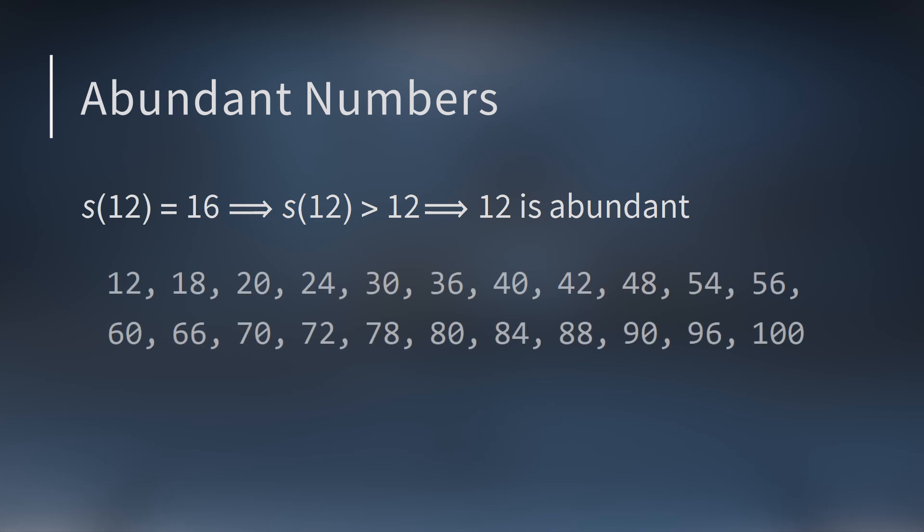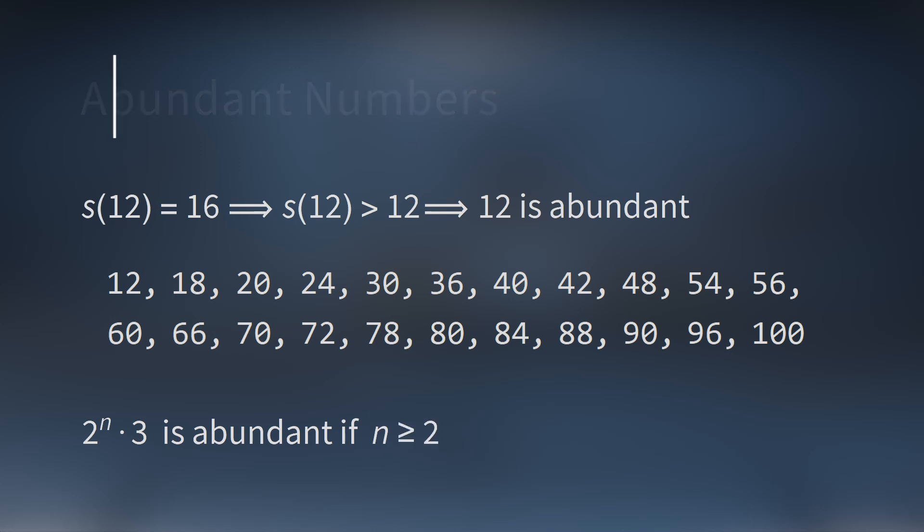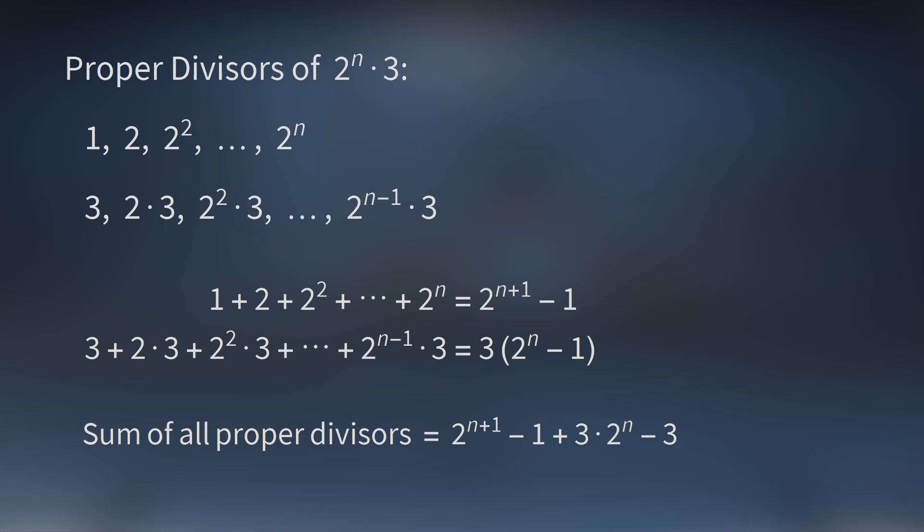What about abundant numbers? We have 12, that's an abundant number. One pattern is if you take any power of 2 greater than 1 and multiply it by 3, then that number is going to be an abundant number. We can quickly show why this works. If you look at the proper divisors of 2 to the nth times 3, you have 1, 2, 2 squared, on up to 2 to the nth. And then you have 3, 2 times 3, 2 squared times 3, on up to 2 to the nth minus 1 times 3. Remember, we're leaving out 2 to the nth times 3, because that's not a proper divisor. If you add up all these divisors, which are two geometric series, you get this expression. When simplified, it's abundant whenever n is greater than 1. So there's also an infinite number of abundant numbers too.